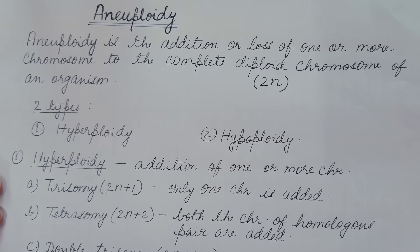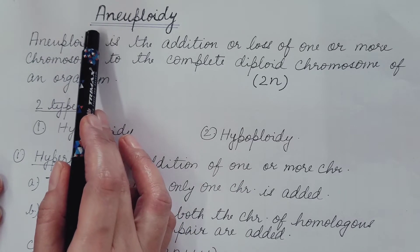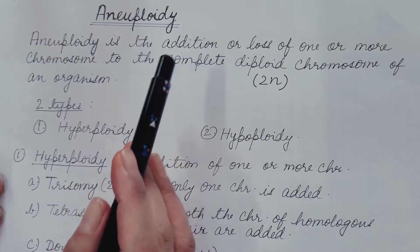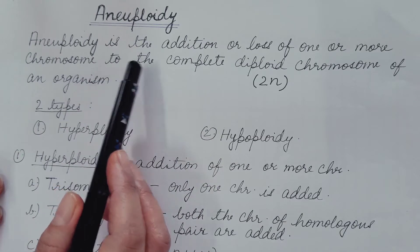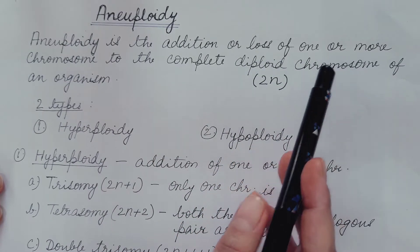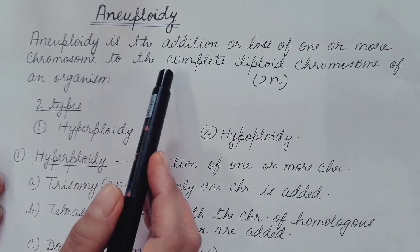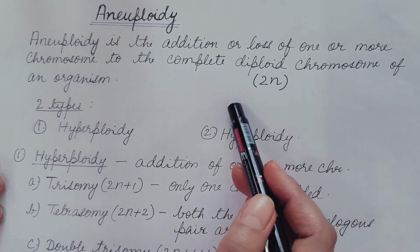Hello friends, in the last video we talked about euploidy — we mainly discussed polyploidy, you can watch that video, the link is given in the description box. Today we are going to talk about aneuploidy. Aneuploidy is the addition or loss of one or more chromosomes to the complete diploid chromosome set of an organism.